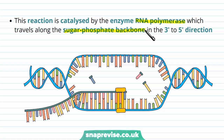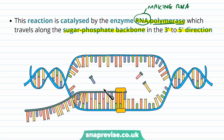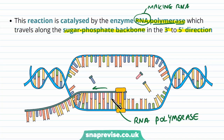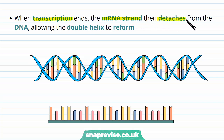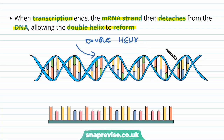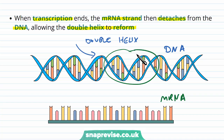RNA polymerase travels along the sugar-phosphate backbone in the 3' to 5' direction. The gene is read from 5' to 3', so the mRNA is synthesized in the 5' to 3' direction. Once transcription finishes, the mRNA strand detaches from the DNA and the DNA double helix reforms. This is important because the nucleus and cytoplasm are harsh environments, and it's important to protect the bases from mutation. Only the area of the gene we wanted to transcribe was ever unwound — it would be a waste of energy and dangerous to unwind the whole DNA molecule.